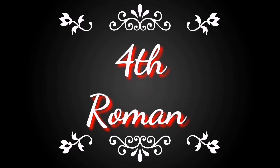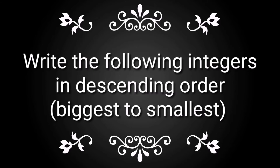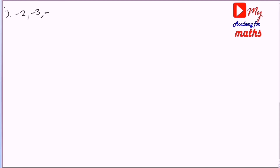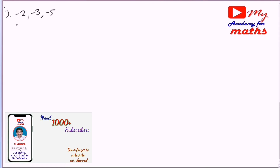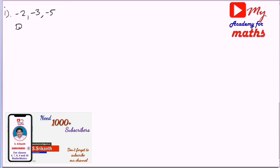Fourth Roman: the question is write the following integers in descending order. Descending order is the biggest to smallest — quite opposite to ascending order. Big values to small values, first bit: minus 2, minus 3, minus 5.